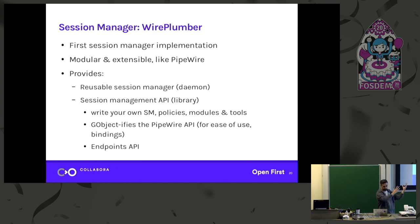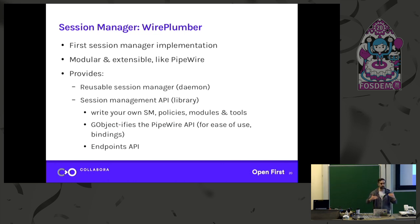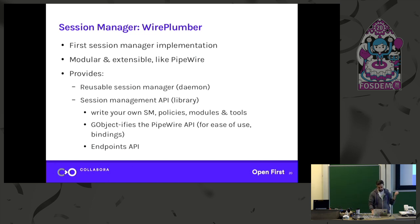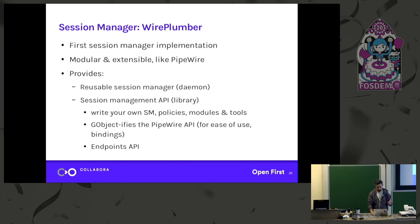To write modules for WirePlumber to extend its features, and tools around that. It's written using GObject. It provides a GObject-ified API on top of PipeWire for ease of use and for enabling bindings in other languages — that would be super useful.